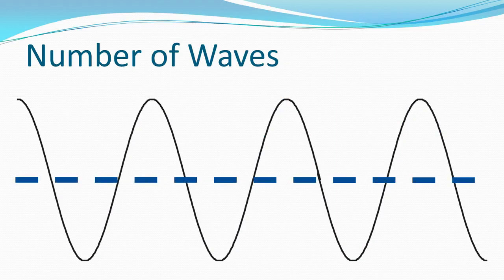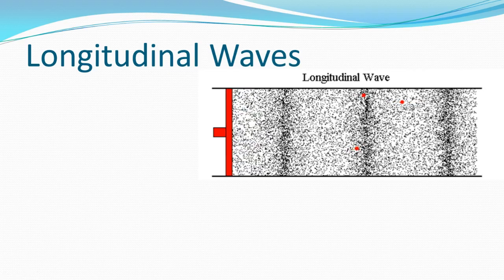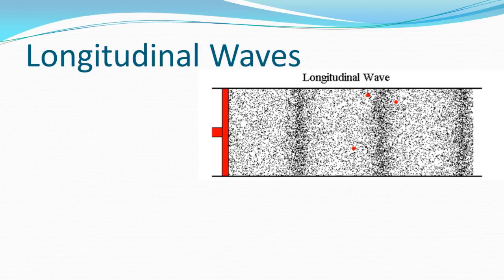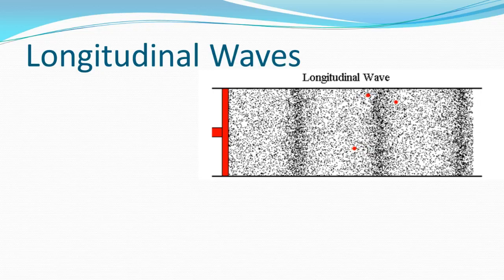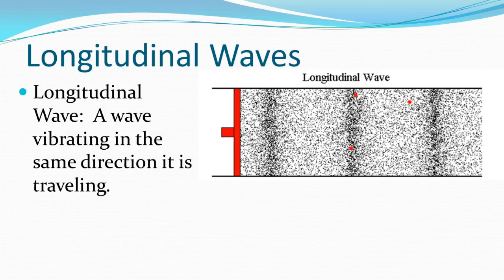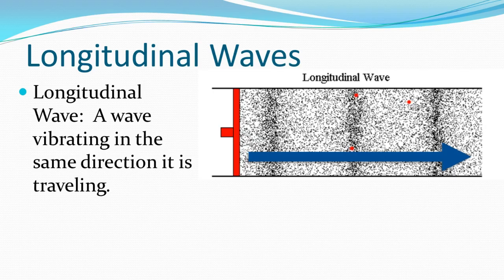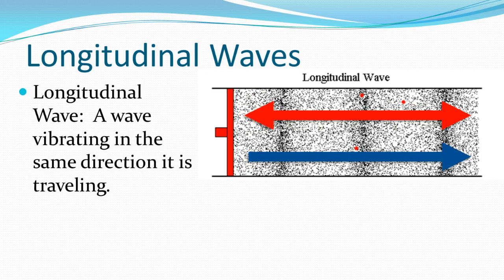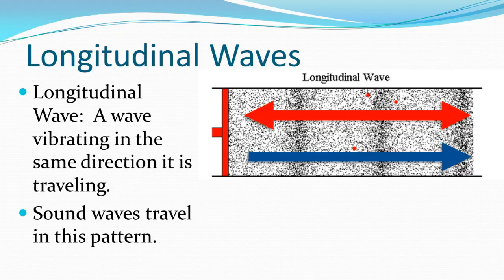Another common wave is a longitudinal wave, also known as a compressional wave, because what we're doing is compressing the medium — passing through different periods of compressed and uncompressed regions. A longitudinal wave is a wave vibrating in the same direction it's traveling. The object creating the wave is also moving in the same direction, oscillating back and forth and creating compressions. Sound waves travel in this same pattern.